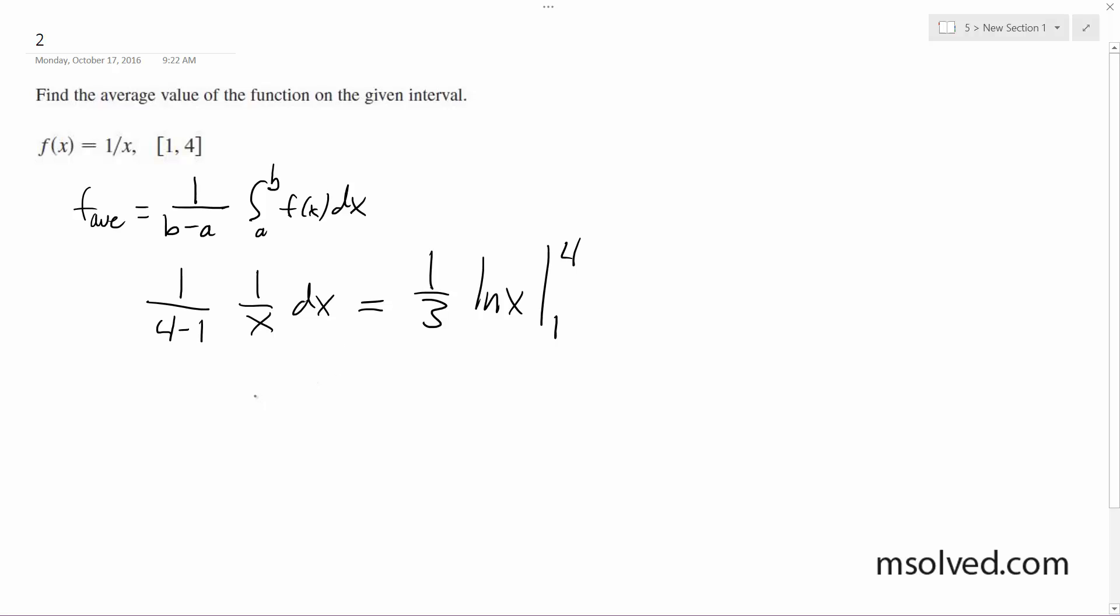So what we end up with here is 1 third, and then ln of 4 is just ln 4, and ln of 1 is 0. What we end up with is ln 4 over 3, which is approximately equal to 0.46. That's it.